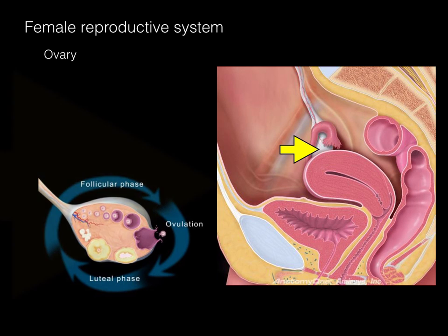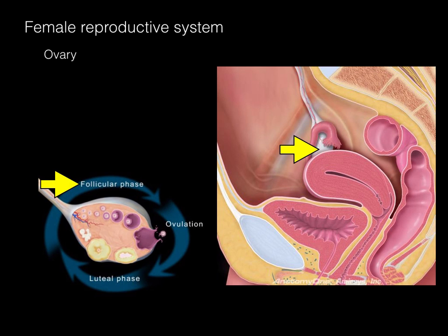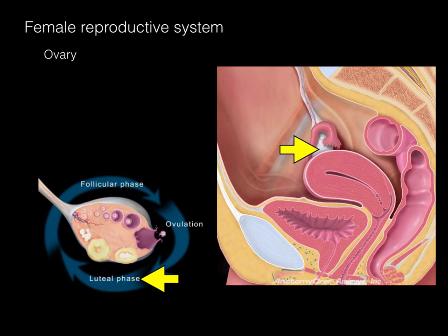In this diagram, we see the follicular phase, where a primary follicle becomes a secondary follicle. This becomes a Graafian follicle, and then ovulation occurs where the ovum is ejected into the peritoneal cavity. The resultant corpus luteum is responsible in the luteal phase for making progesterone to